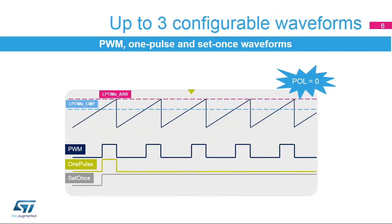The LP-TIM-CMP and LP-TIM-ARR registers, in conjunction with the WAVE bit field from the LP-TIM-CFGR register and SNG-STRT from the LP-TIM-CR register, are used to control the output waveform. The output waveform is either a typical PWM signal, with its period and duty cycle controlled by the LP-TIM-ARR and LP-TIM-CMP registers respectively, or it is a single pulse with the last output state defined by the configured waveform.